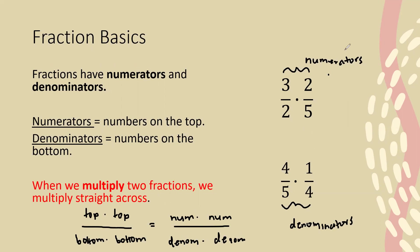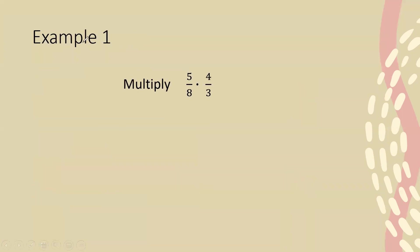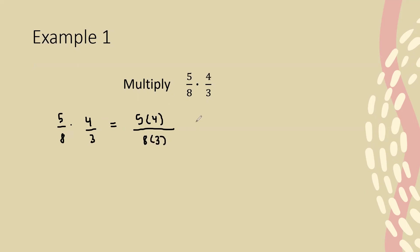In this first example we're asked to multiply 5/8 times 4/3. I'm going to write out my fractions here. To multiply fractions we multiply straight across, so we multiply our top numbers together: 5 times 4, and put that over our bottom numbers multiplied together: 8 times 3. So 5 times 4 gives me 20, and 8 times 3 gives me 24. You can simplify further if you like, but I'm going to leave it as 20/24.